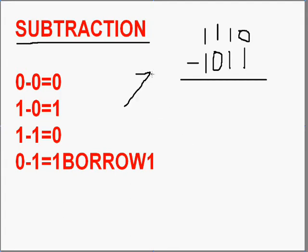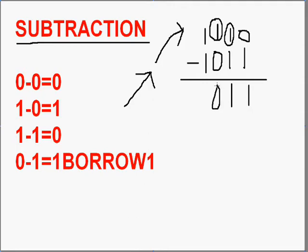As you can see here, there's a problem. So, 0 minus 1 equals 1, and this will become 0, and 0 minus 1 again will become 1, and this will become 0 again. And 0 minus 0 equals 0, and 1 minus 1 equals 0.